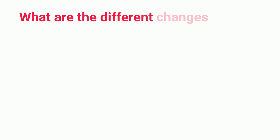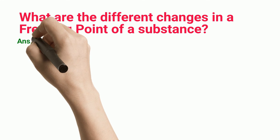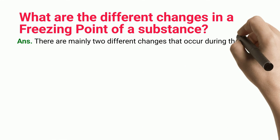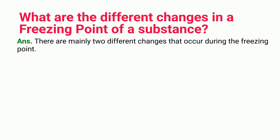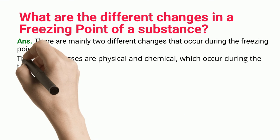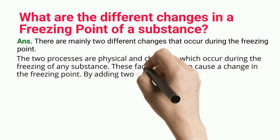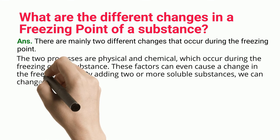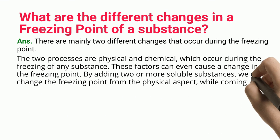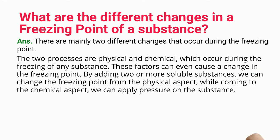What are the different changes in the freezing point of a substance? There are mainly two different changes that occur during the freezing point: physical and chemical, which occur during the freezing of any substance, and these factors can even cause a change in the freezing point. By adding two or more soluble substances, we can change the freezing point from the physical aspect, while from the chemical aspect, we can apply pressure on the substance.